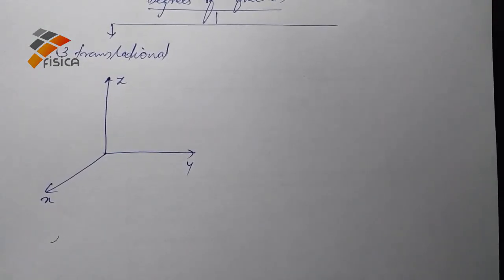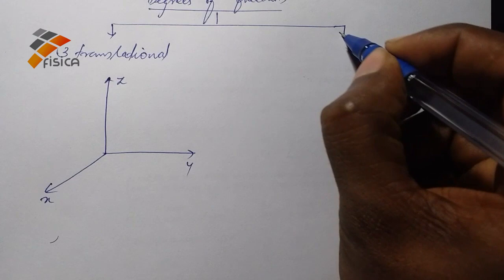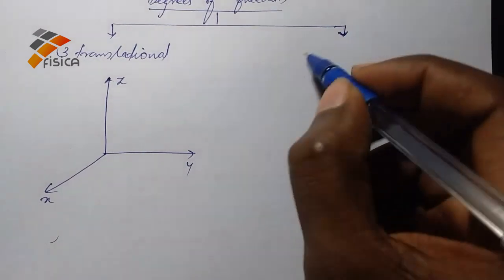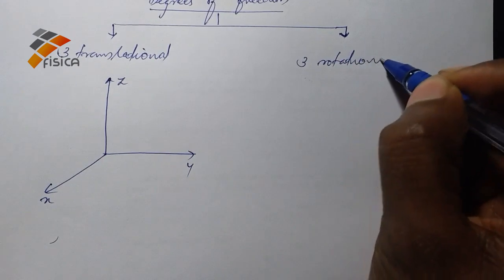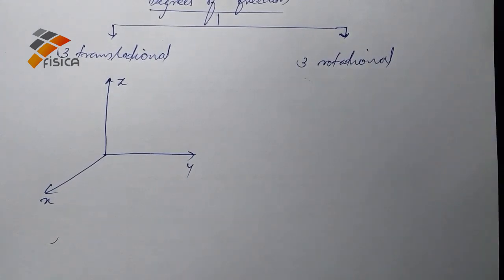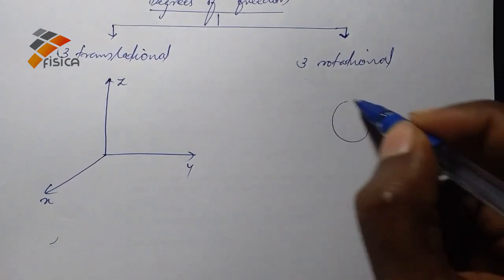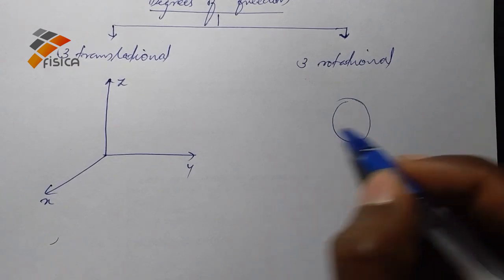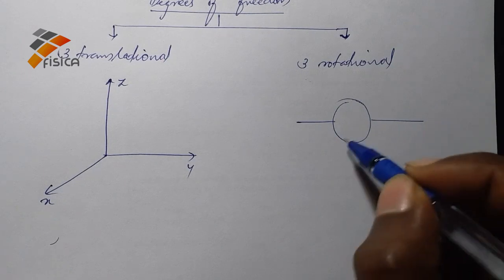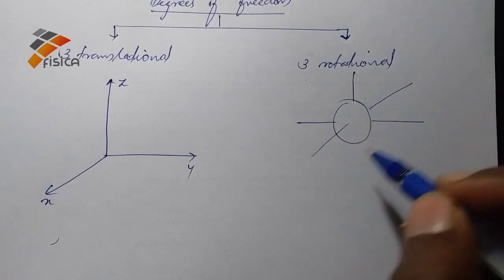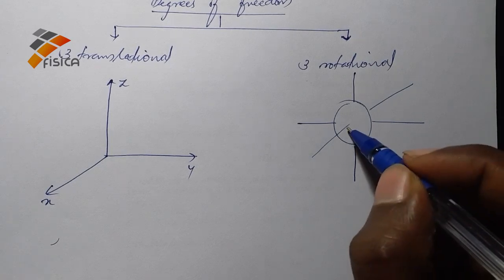Now the other case is they have three degrees of rotational freedom. So this is a rigid body. This is y-axis, x-axis, and z-axis.